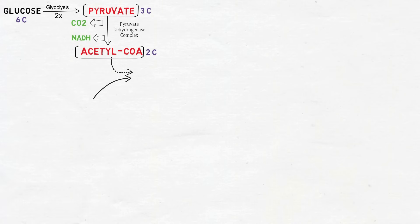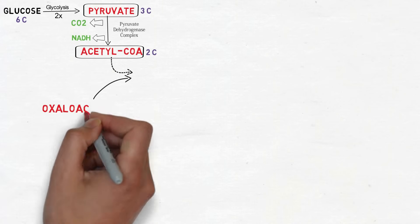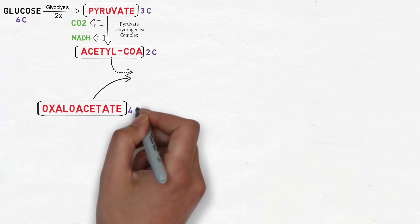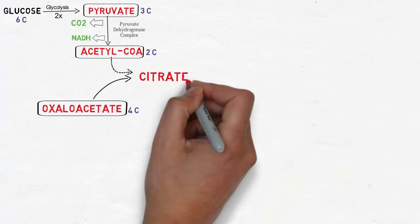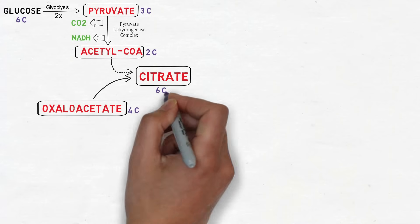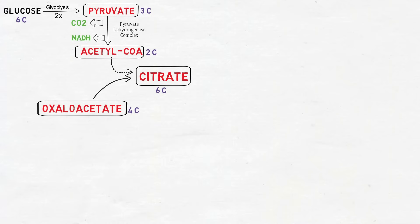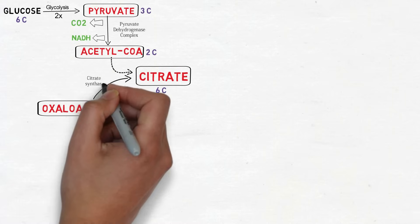In the next step the acetyl-CoA combines with oxaloacetate which is a 4-carbon compound to form citrate and hence the resulting molecule is a 6-carbon compound. This reaction is catalyzed by the enzyme citrate synthase.